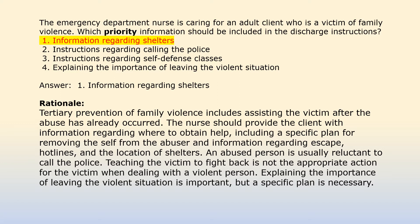Answer 1: Information regarding shelters. Tertiary prevention of family violence includes assisting the victim after the abuse has already occurred. The nurse should provide the client with information regarding where to obtain help, including a specific plan for removing the self from the abuser and information regarding escape hotlines and the location of shelters. An abused person is usually reluctant to call the police. Teaching the victim to fight back is not appropriate when dealing with a violent person. Explaining the importance of leaving is important, but a specific plan is necessary.